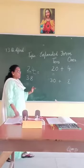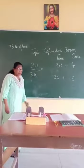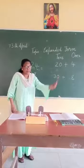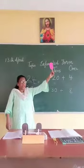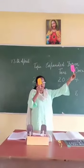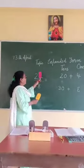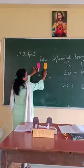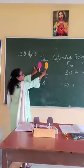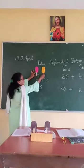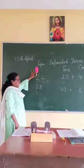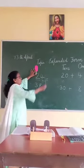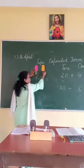Did you understand children? This is called expanded form. You saw this — this is in which place? This is in the 10s place, and this is in the 1s place. So 2 is in the 10s place and 4 is in the 1s place. So we say 2 tens gives you 20, plus 4 ones, so 24.